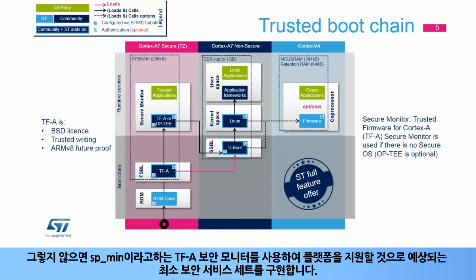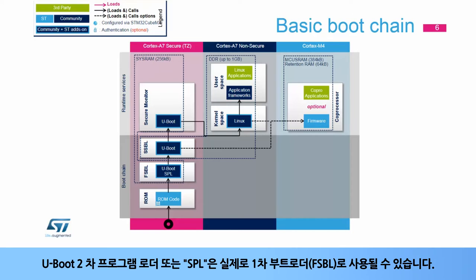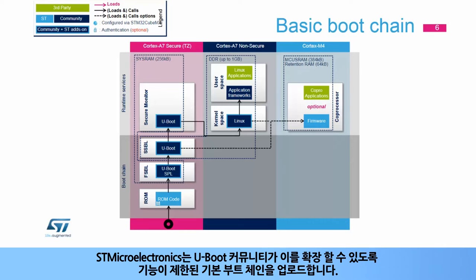The basic boot chain is also proposed to generate both FSBL and SSBL from a unique source code, U-Boot. U-Boot Secondary Program Loader, or SPL, can indeed be used as first-stage bootloader. STMicroelectronics uploads the basic boot chain with a limited number of features to enable the U-Boot community to extend it.